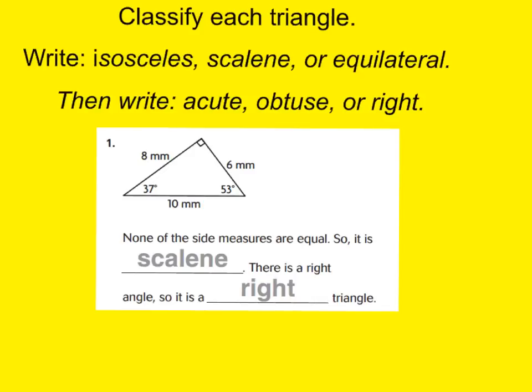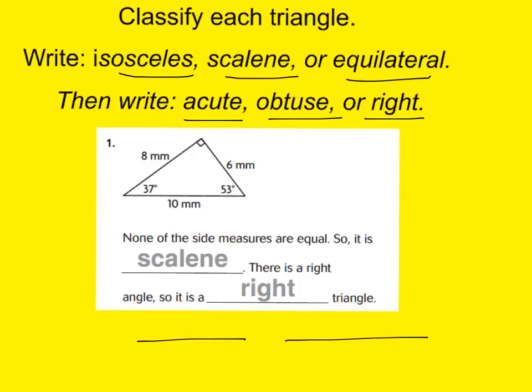When you classify a triangle, you're going to give it two names. The first name is going to be either isosceles, scalene, or equilateral. The second name would either be acute, obtuse, or right. Think of it like you — you have a first name and a last name. With triangles, the first name is all about the length of the sides, and the second name is all about the type of angles.